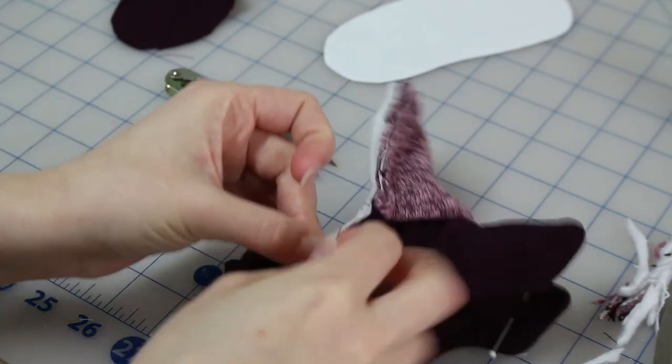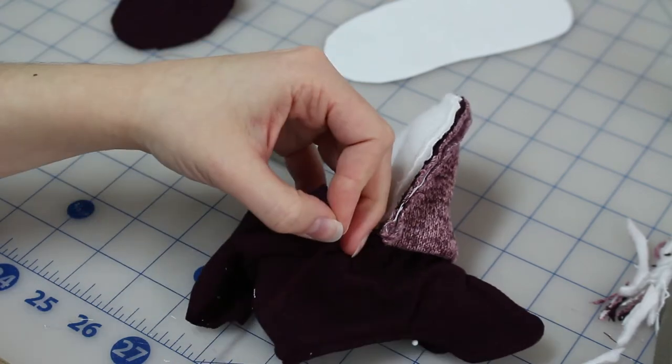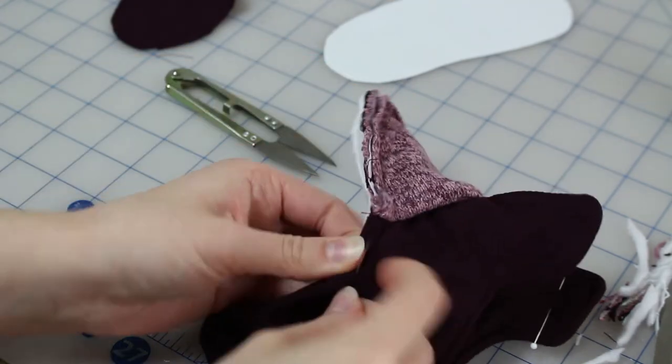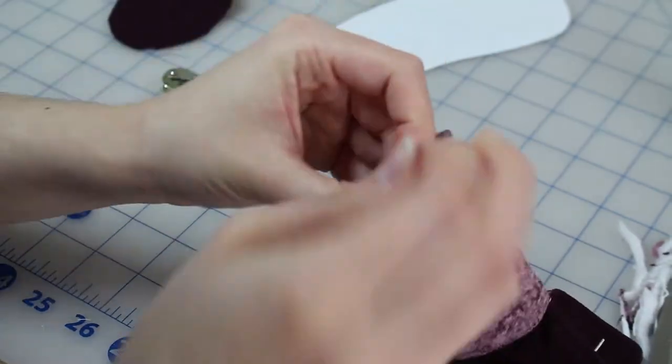So you can't see this seam allowance once I've got this attached. I don't think the pattern or the instructions actually called for this step. They just cut down the seam allowance so it wasn't as bulky and left it the way it was. But I kind of want the inside to be finished.